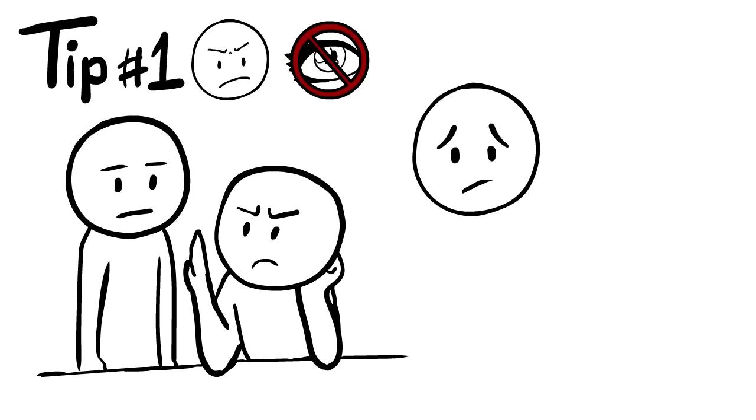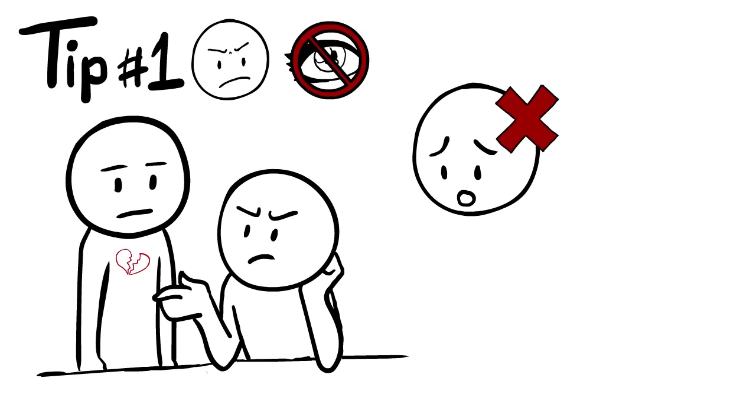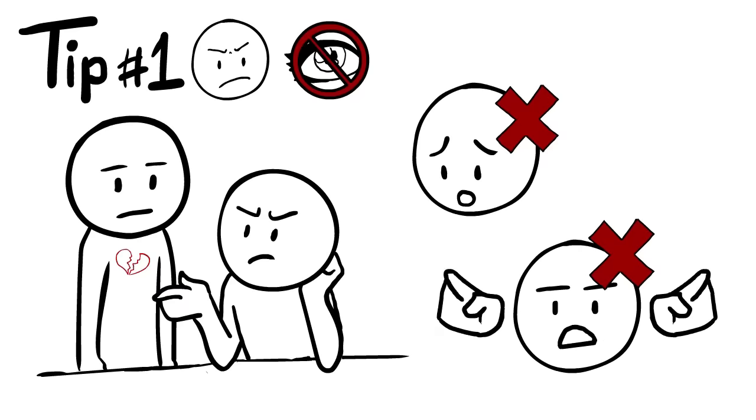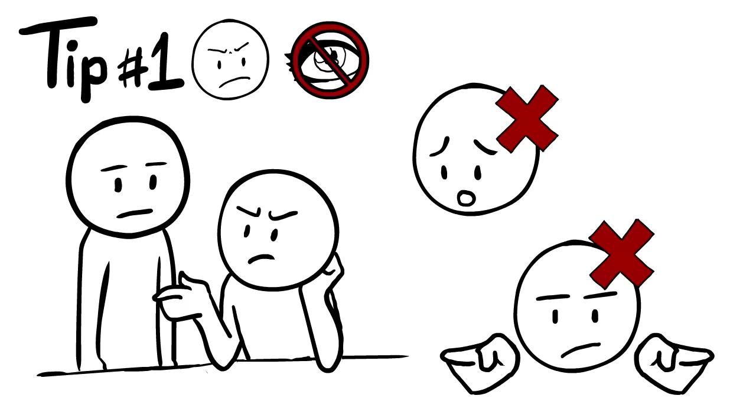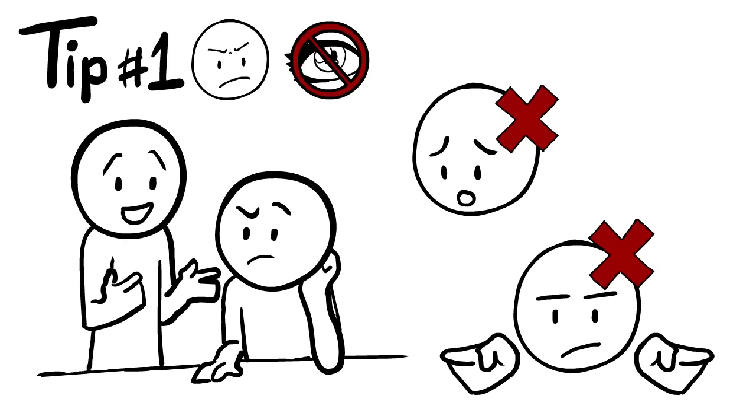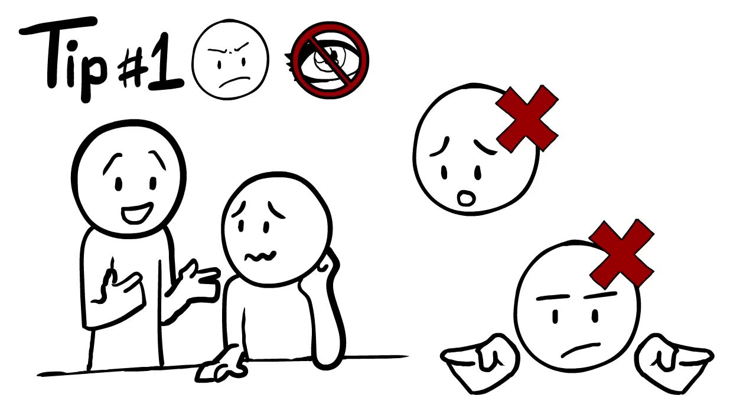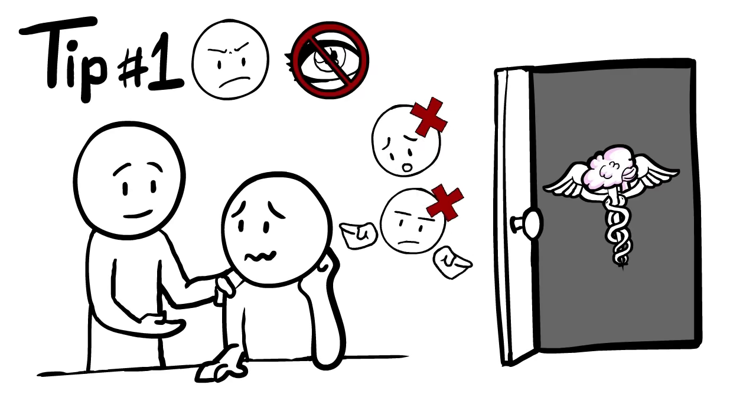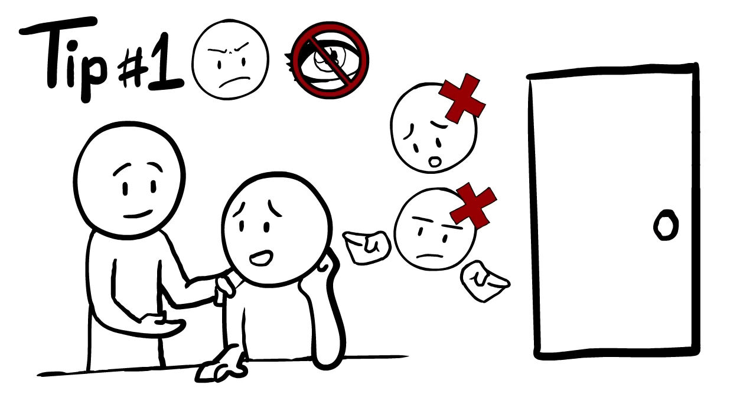Don't sigh when your loved one responds in a way you don't like, and don't talk to them as if they are stupid. Keep in mind, if they could act healthy, they would. And if you show a negative reaction to your loved ones, they are much more likely to hide their feelings.